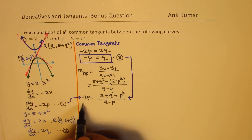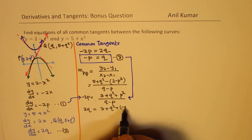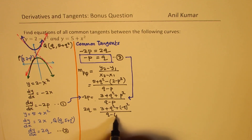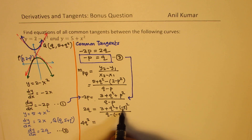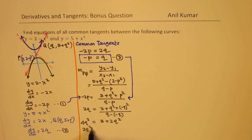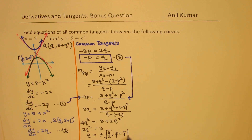Since q equals minus p, we substitute and get: 2q equals 3 plus q squared plus q squared, over q minus minus q, which is 2q. Cross multiplying gives 4q squared equals 3 plus 2q squared. Bringing terms to the left side gives 2q squared equals 3. That gives the value of q as plus or minus square root of 3 over 2, and therefore p equals minus plus square root of 3 over 2.